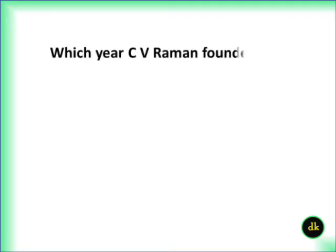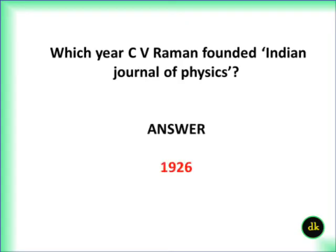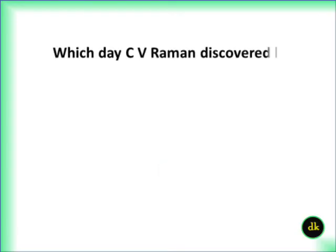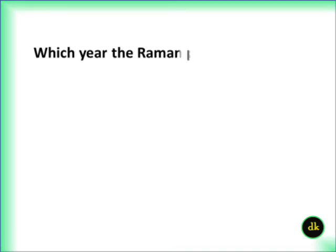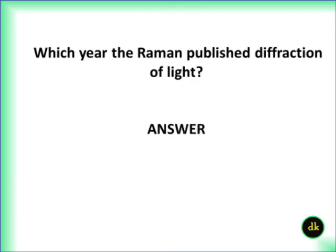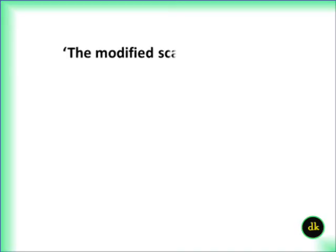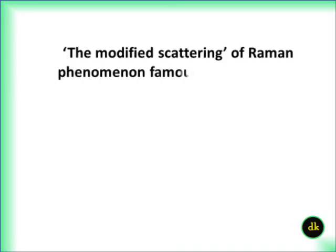Which year C.V. Raman founded Indian Journal of Physics? 1926. Which day C.V. Raman discovered light scattering or modified scattering phenomena? 28th February 1928. Which year Raman published Deflection of Light? 1906. The modified scattering or Raman phenomena famously known as the Raman Effect.